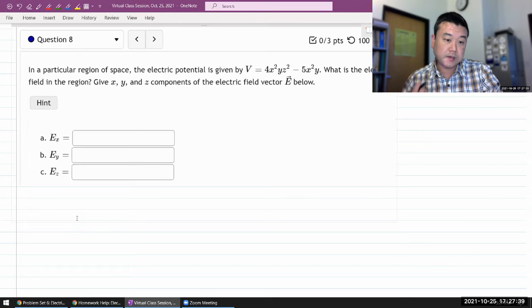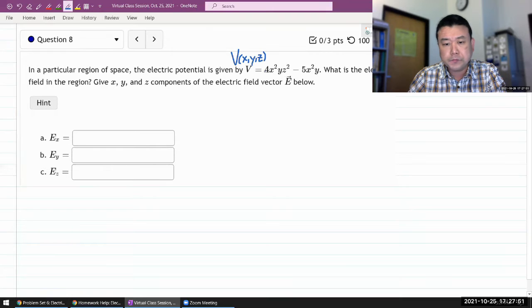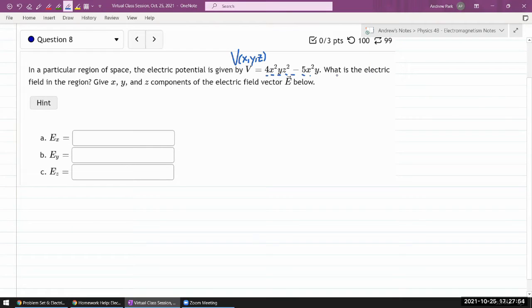So it says in a particular region of space, it's giving us some electric potential as a function of coordinates x, y, and z. And then it asks what is the electric field in the region, presumably as a function of x, y, and z.